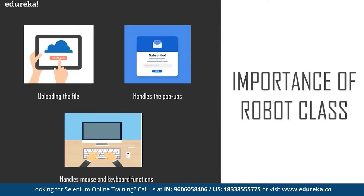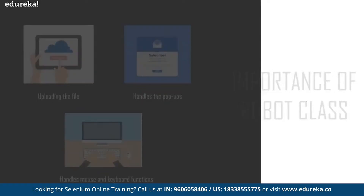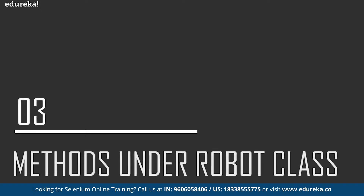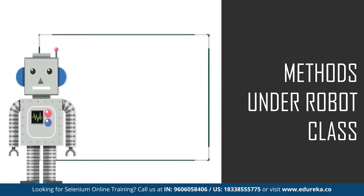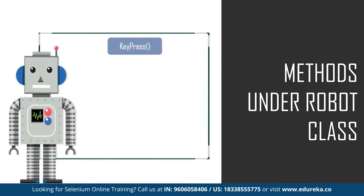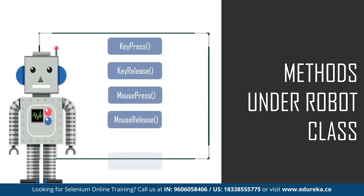Now let's move on to our next topic — the different methods that are used while working on this Robot class. There are basically five different methods. As mentioned earlier, it handles all the keyboard and mouse functions.